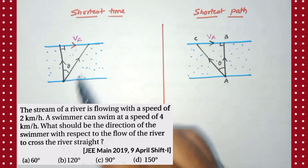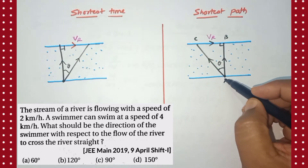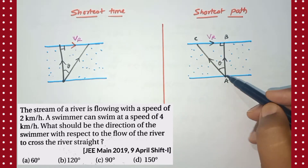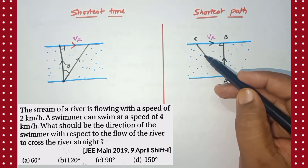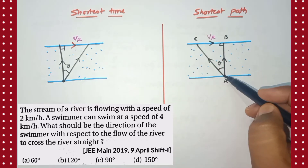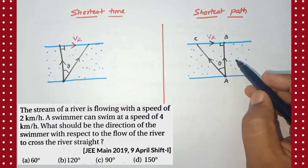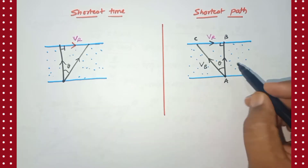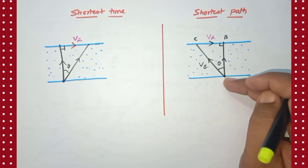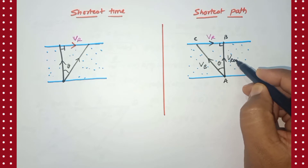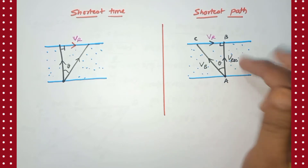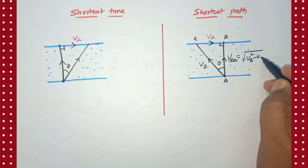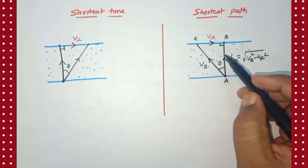This is a case of shortest path and shortest time. When a boat is trying to move to the opposite end in the shortest possible path, as the water is moving to the right, the boat has to tilt its direction so that the river will push it and take it to exactly the opposite bank — which is the width of the river. The resultant velocity, by Pythagoras theorem, will be the square root of vb² minus vr².